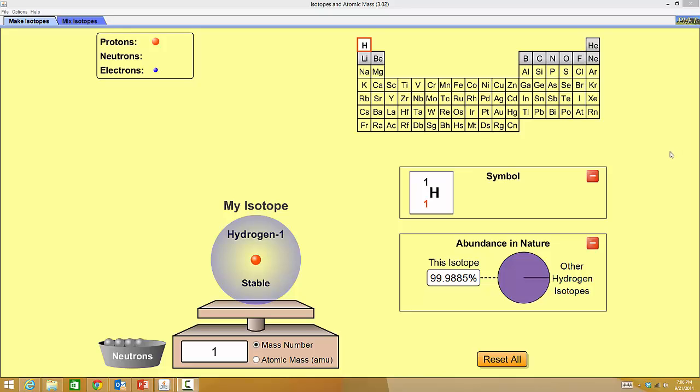Welcome to our second podcast of unit two. We're going to be talking about isotopes and how to calculate the average atomic mass. So you need your packet and your calculator and your periodic table and we're at page six.